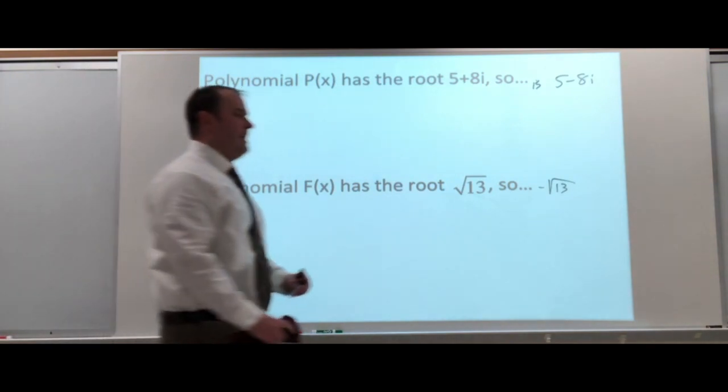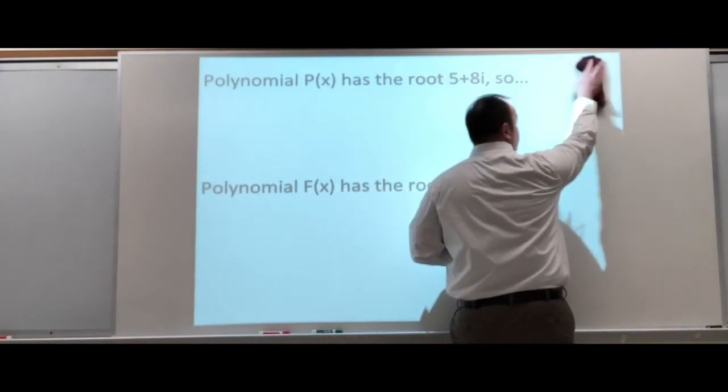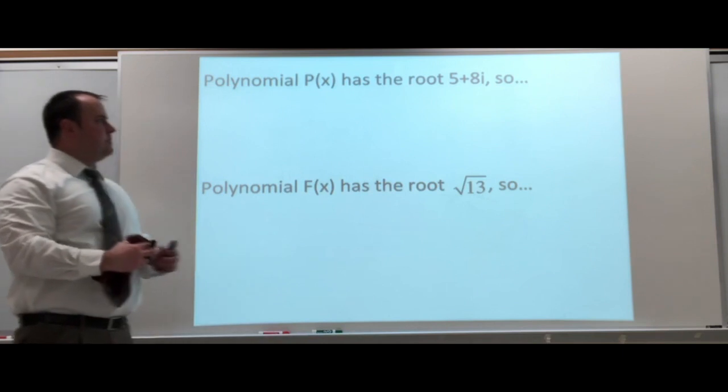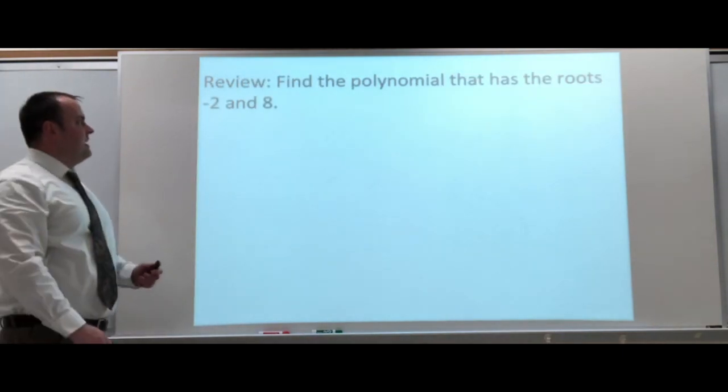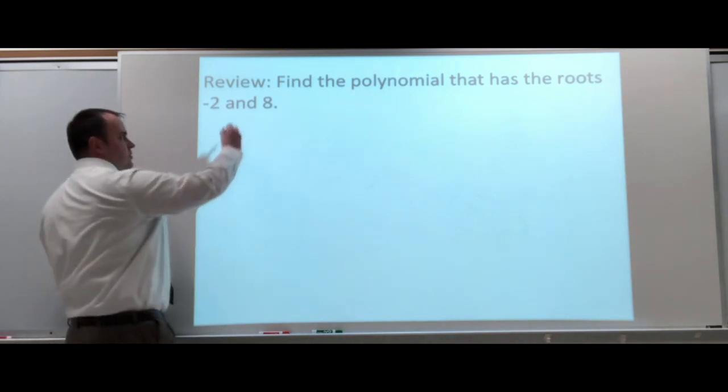Now, that's going to be important when I ask you to find polynomials given solutions. So, we did this back a little while ago. Find a polynomial that has the roots negative 2 and 8. And we worked backwards. Given the solutions, we know binomials would be X plus 2, X minus 8.